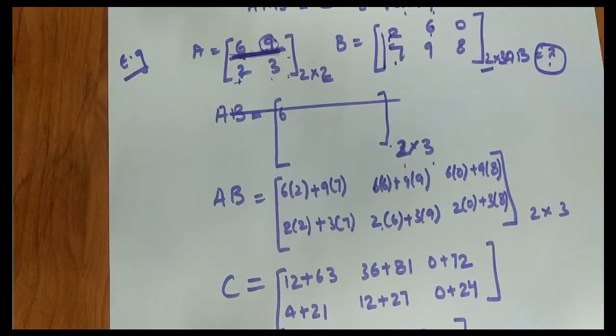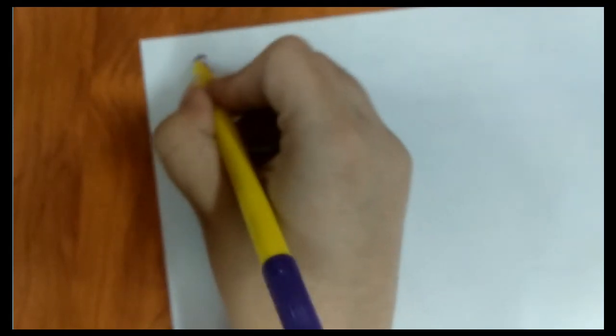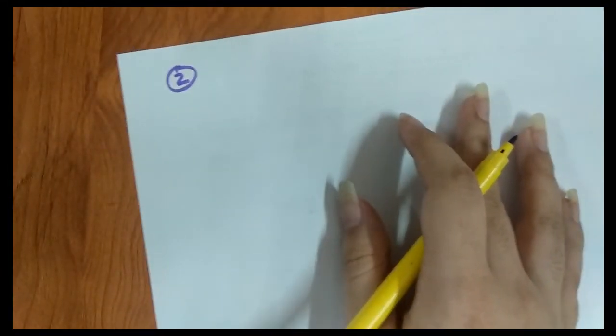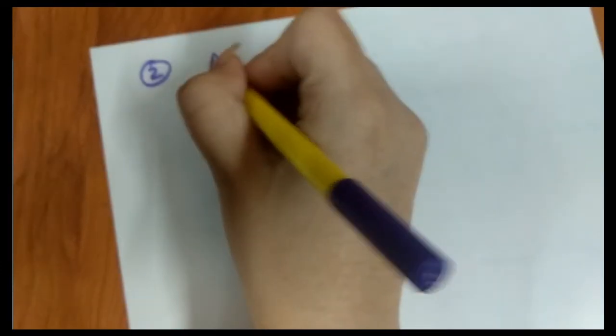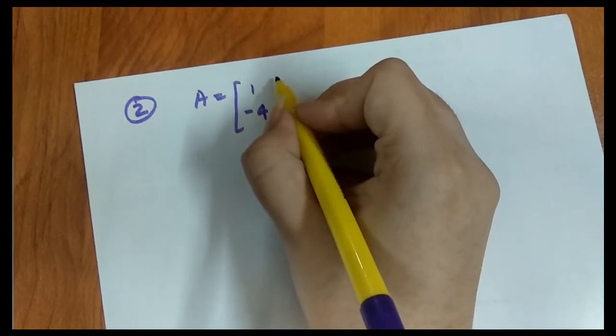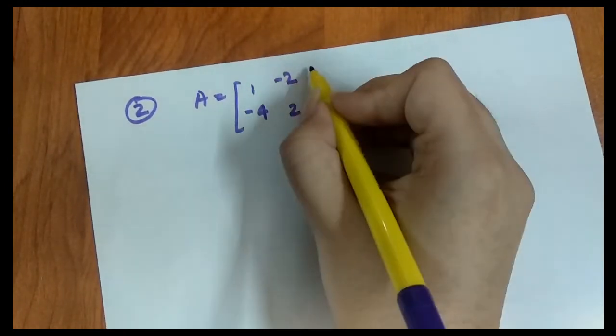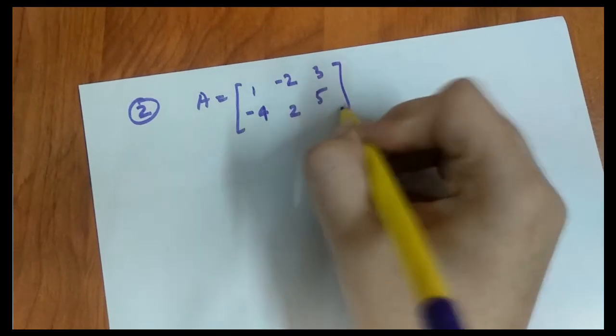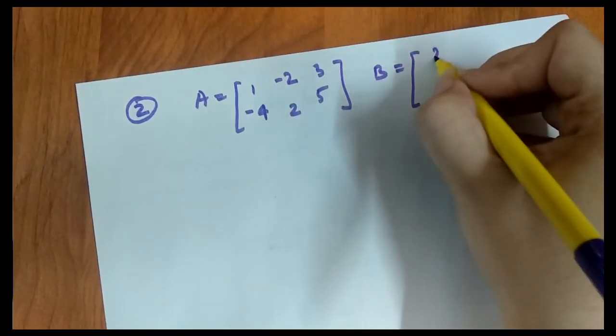Let's take one more example so it becomes clear. This was the first example. Let's take a second example. We'll solve it together so it becomes clear. Let's take matrix A: 1, 0, -2, 2, 3, 5. Matrix B: 2, 4, 2, 3, 5, 1. We need to find AB.